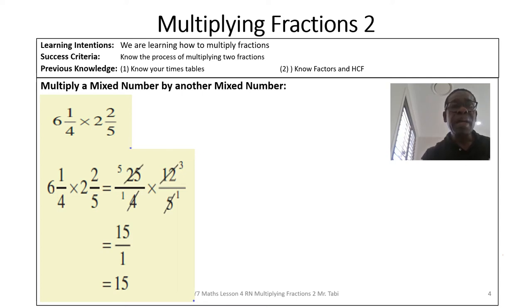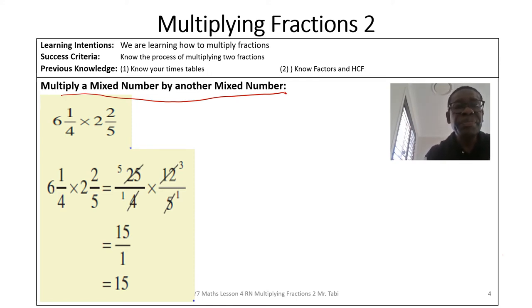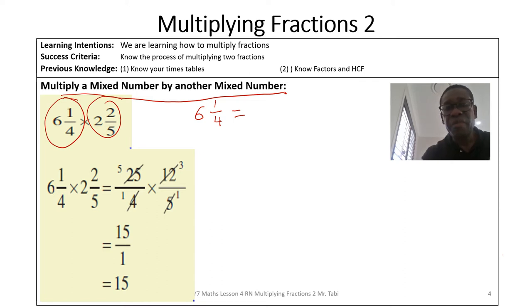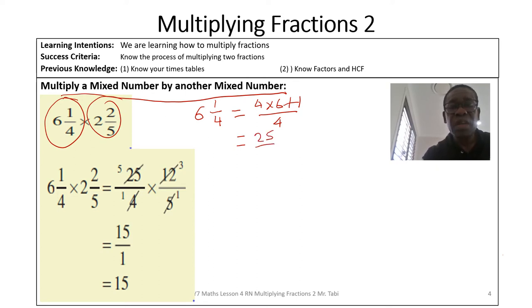Now we're going to multiply a mixed number by a mixed number. For mixed numbers, we first have to change them into improper fractions. For 6 and 1/4, to convert to an improper fraction — as we've done when adding fractions — we calculate four times six plus one, all over four. Four times six gives 24, plus one gives 25, so 6¼ = 25/4.